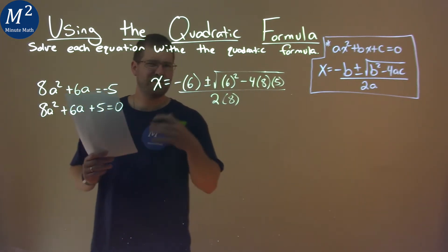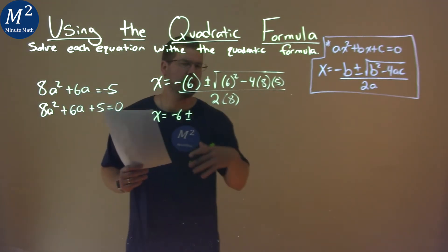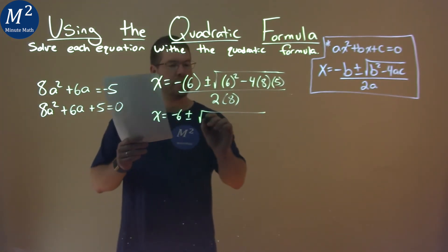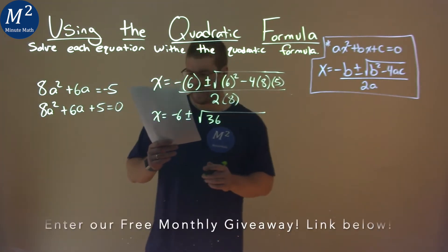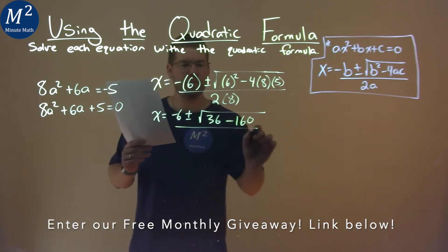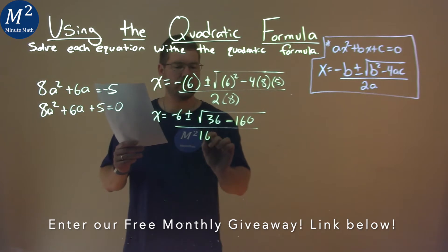So now let's go solve this. Break it down. Negative 6 right there, plus or minus. Let's deal with inside the square root. 6 squared is 36, and 4 times 8 times 5 is 160, so we have minus 160 here. All over 2 times 8, which is 16.